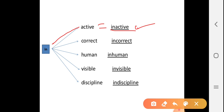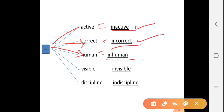Next, come to 'correct'. After joining 'in' to 'correct', we get the answer: incorrect. Third one is 'human'. After joining 'in' to 'human', we get the answer: inhuman.